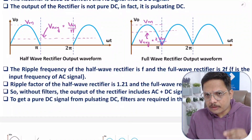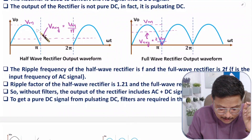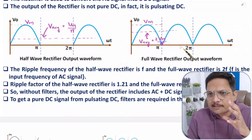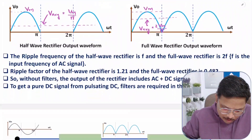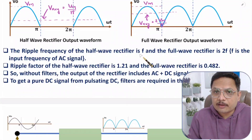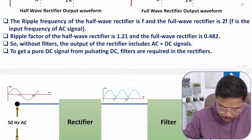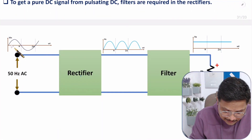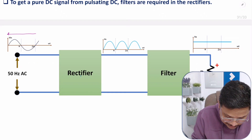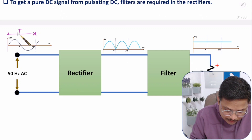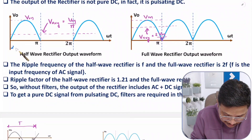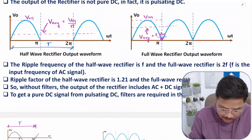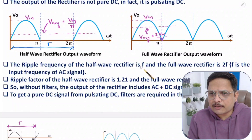There is always a high-frequency ripple component present in both half-wave and full-wave rectifier outputs. To get pure DC, we need to use filters. If you talk about ripple frequency of a half-wave rectifier, the input AC has a time period T. The pulsating DC from the half-wave rectifier comes with the same time period, so ripple frequency with half-wave is f — the same as the input frequency.